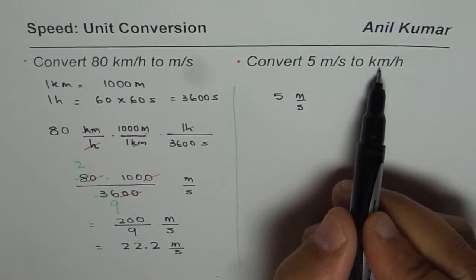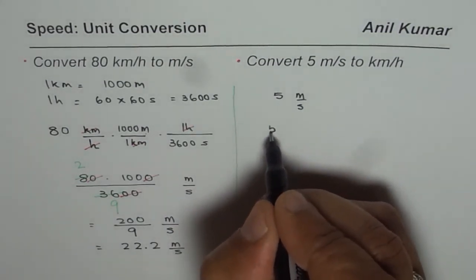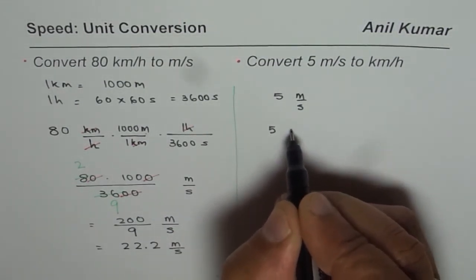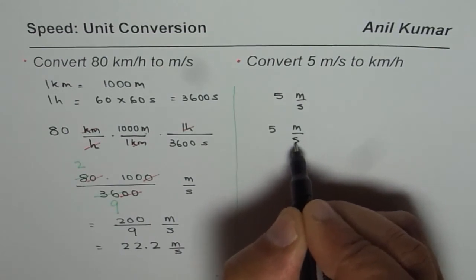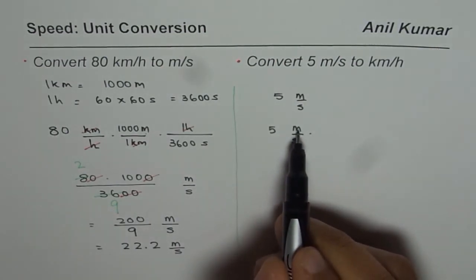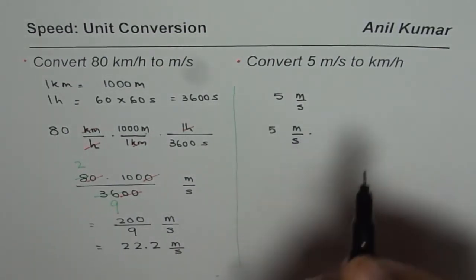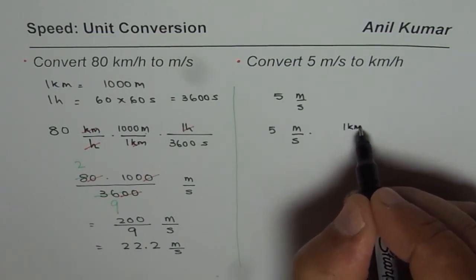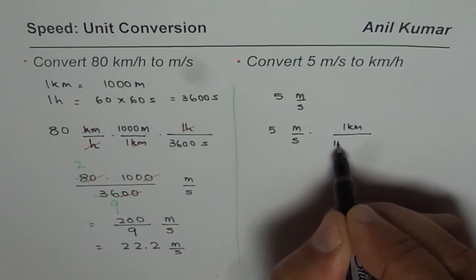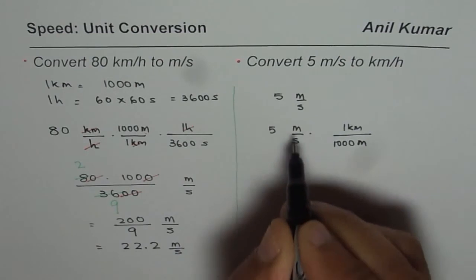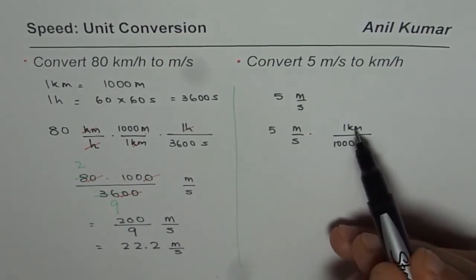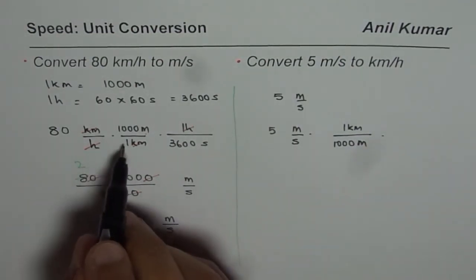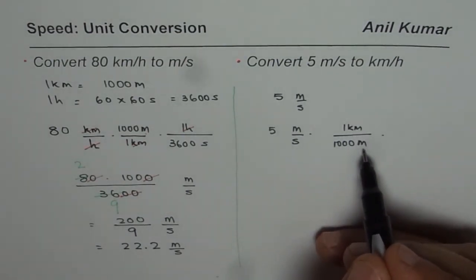So we have 5 meters per second. What do we need? We need kilometers. So what are we going to do? We will write this as 5 meters per second. We don't want meters but we want kilometers. So we will write 1 kilometer equals 1000 meters. We need to cancel it out. That is why we wrote like this, not like that. 1 kilometer over 1000 meters.